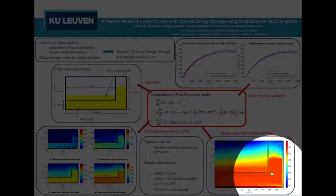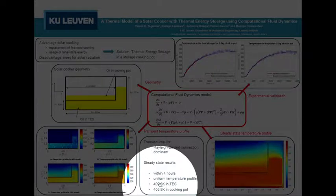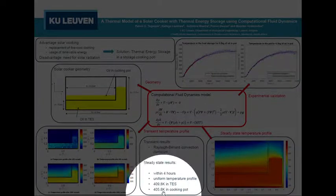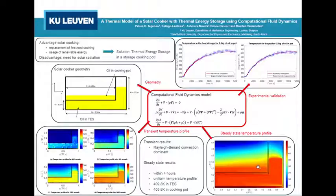And if you look at the temperature inside the thermal energy storage, it can reach around 410 Kelvin. And in the cooking pot, it reaches a temperature of around 406 Kelvin. So these temperatures are high enough to bake different food items.